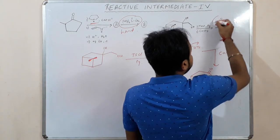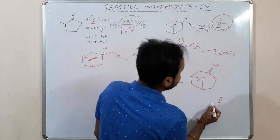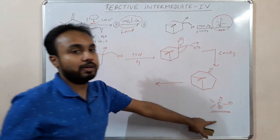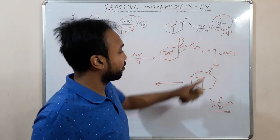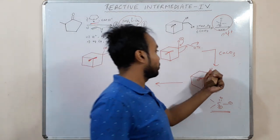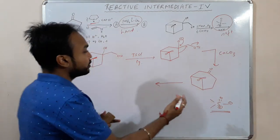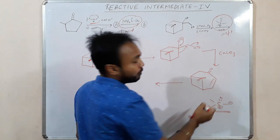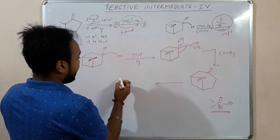Now we have given a sulfoxonium ylide. This is soft. But we don't have any option — we don't have any double bond, we only have this carbonyl carbon. Since we don't have any option, this soft ylide will attack the hard center. If there were a double bond, it would prefer the double bond over the ketone. But since we don't have that option, it will add there only.